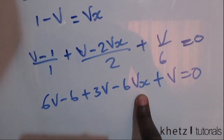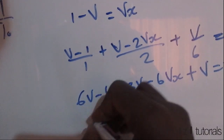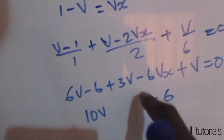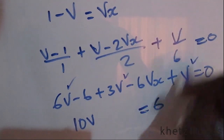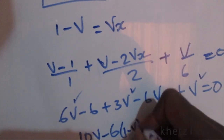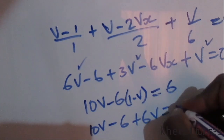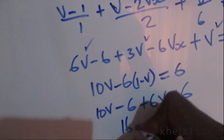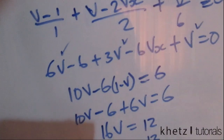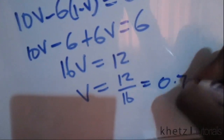We substitute vx = 1 minus v into the equation. Combining the v terms: 6v + 3v + v = 10v. Then substituting vx gives negative 6(1 minus v), which expands to negative 6 plus 6v. So 10v plus 6v equals 16v, and 16v equals 12, giving v equals 12/16 equals 0.75.